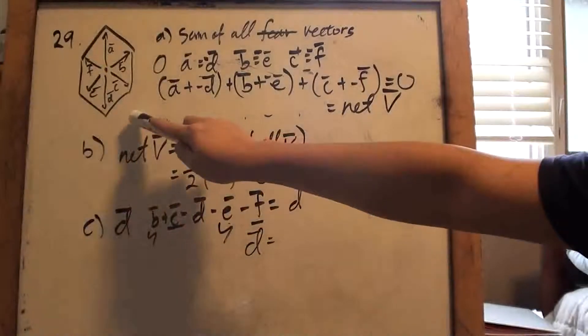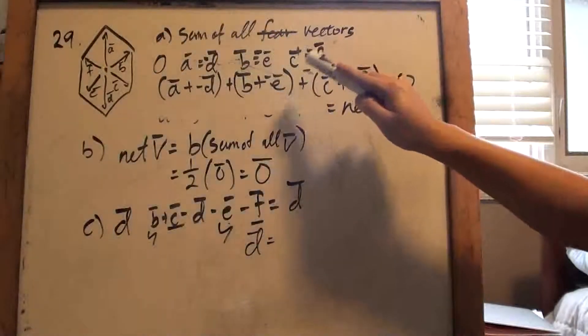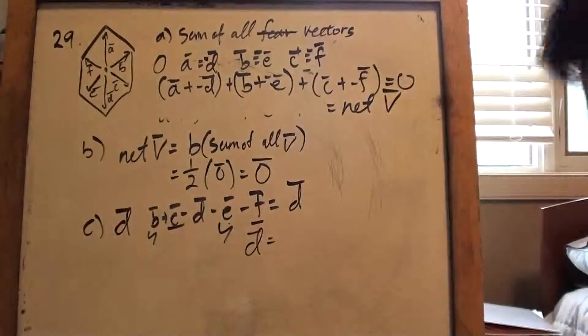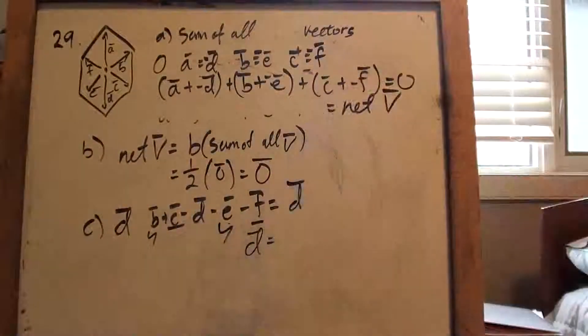So, basically, you know, we're trying to figure out what are the sum of all vectors, right? So, basically, if you just use common sense, right, I mean, you can see that A is gonna be the same as D, F is the same as C, and E is the same as B, so, they will cancel out.